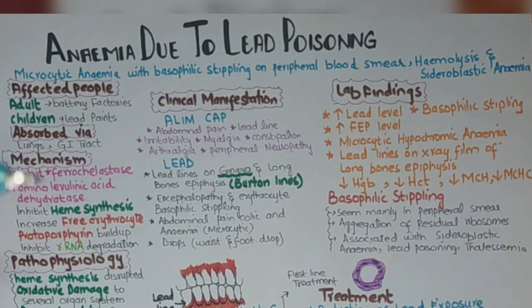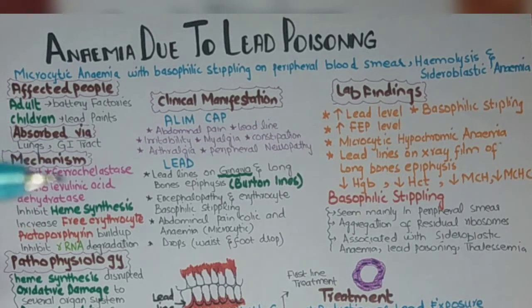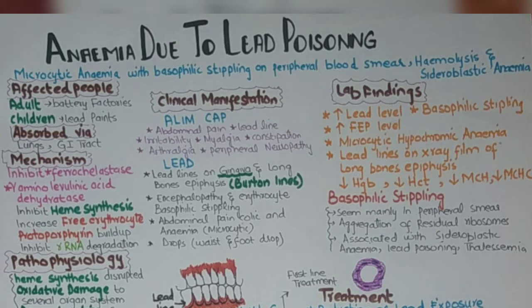The people who are affected are adults and children. Adults who work in battery factories or who have exposure to lead, and children who use lead paints for their drawings. Lead is absorbed via the lungs and GI tract.